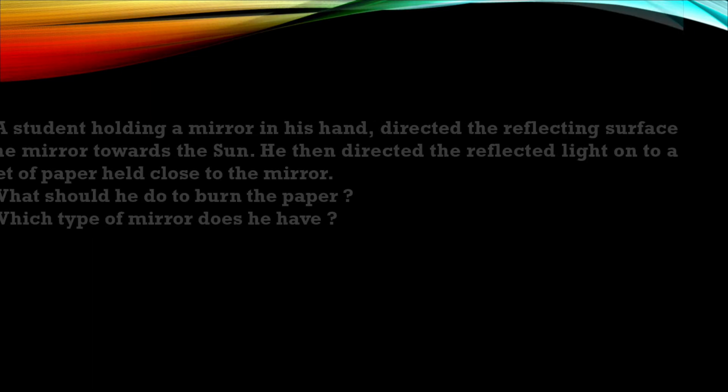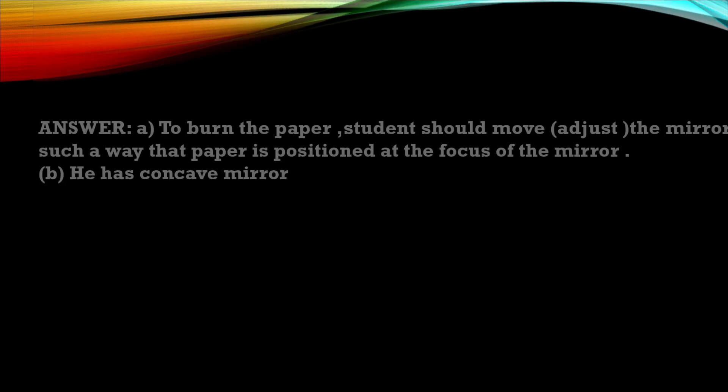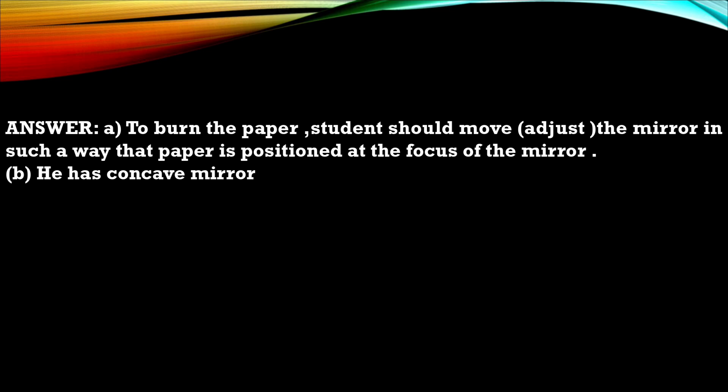Question number 14. A student holding a mirror in his hand directed the reflecting surface of mirror toward the sun. He then directed the reflected light onto a sheet of paper held close to the mirror. A. What does he do to burn the paper. B. Which type of mirror does he have. This is the answer for that question.